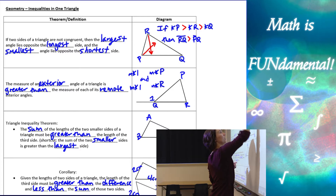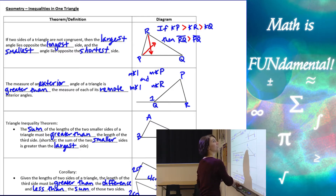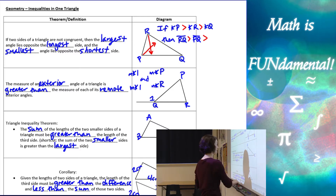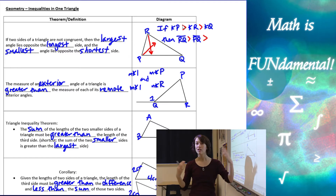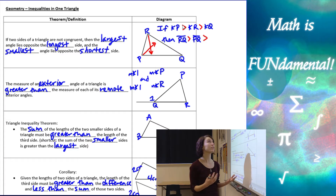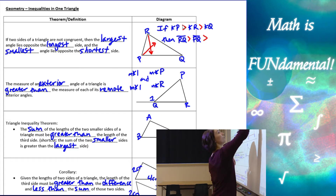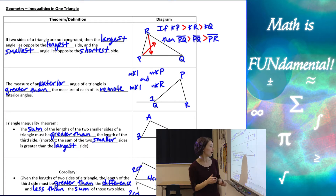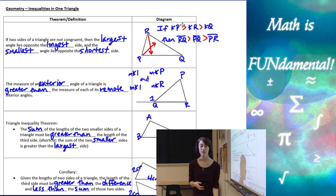PQ has to be greater than the side across from angle Q, the smallest angle, which is side PR. So that's what that first theorem tells us.